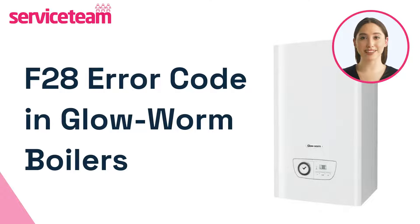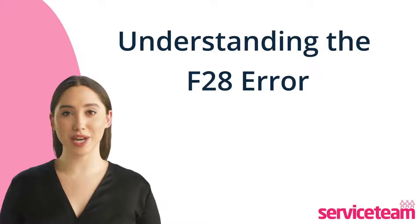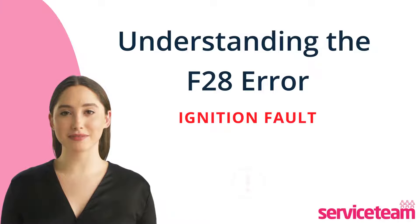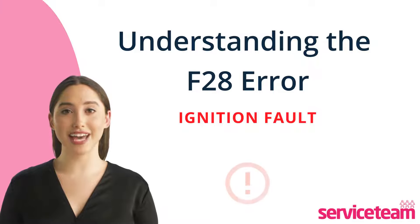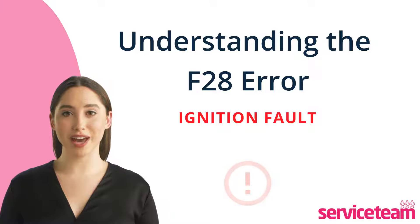If your Glow-Worm boiler has an F28 fault, we're going to discuss how to fix this error code and get your boiler back up and running smoothly. The F28 fault with Glow-Worm boilers typically signals an ignition issue, which could be caused by various factors such as a lack of gas supply or a malfunctioning part like the gas valve.